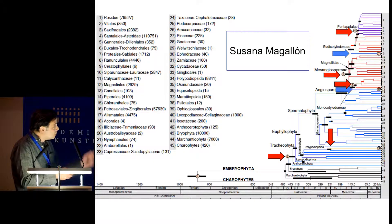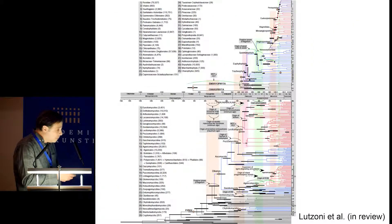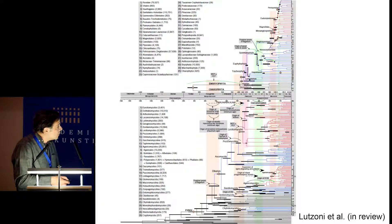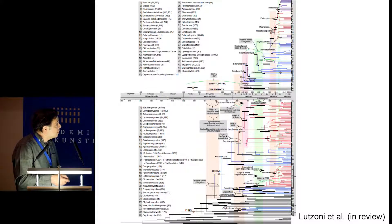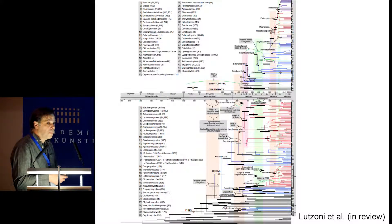Because these are chronograms, we can align them and zoom in. We can see that the largest radiation within the fungi — the Lecanoromycota radiation — took place more or less at the same time as the largest radiation of land plants, which is associated with the origin of vascular plants. That's pretty amazing.